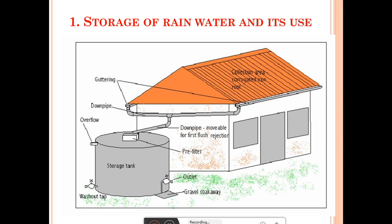For the storage of rainwater method, a rainwater harvesting system consists of four basic elements. First is the collection area — in most cases the roof or terrace of the building, as shown in the figure. Second is the conveyance system — these are the different pipes, gutters and pipe that transport the water. Third is the filtration system — here a filter unit is provided. And fourth is the storage facility.